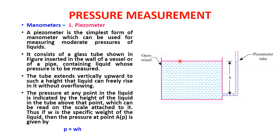The first type of simple manometer is the piezometric tube. Observe this diagram: there is an open vessel with the piezometric tube connected at the bottom, open to atmosphere at the upper end. Always remember that the piezometric tube uses only the liquid whose pressure is to be measured — no other liquid can be used in a piezometer.